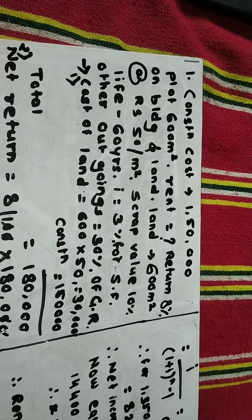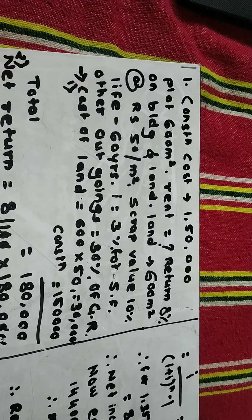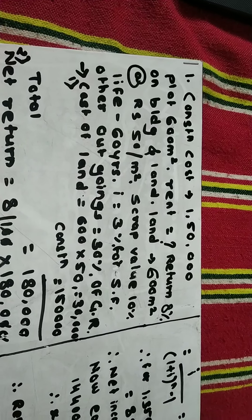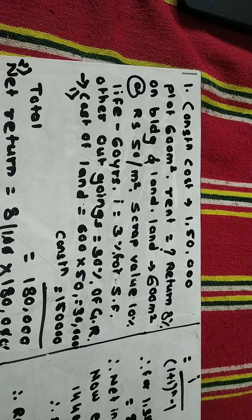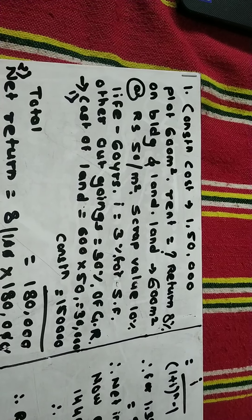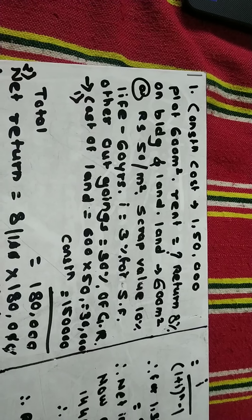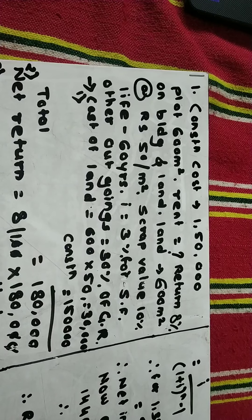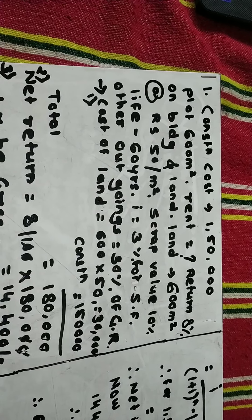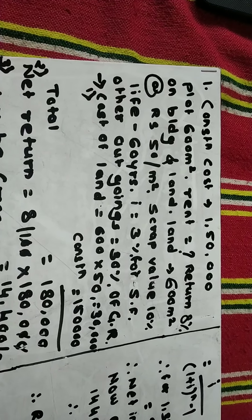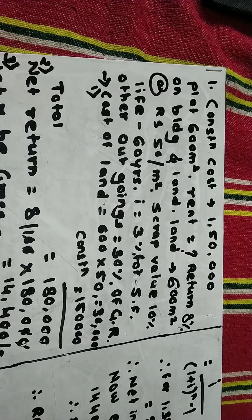I have directly written the given data for the problem. They have given us the construction cost as rupees 1 lakh 50,000, the plot area as 600 meter square, and the expected return as 8 percent on the construction cost as well as on the land. The land area is 600 meter square at a rate of rupees 50 per meter square. The scrap value is 10 percent and the life of the building is 60 years.